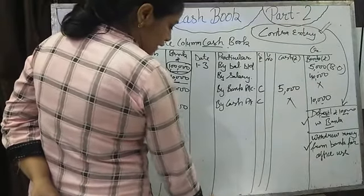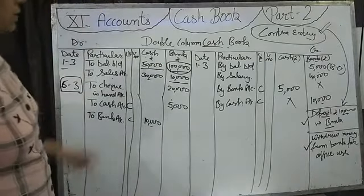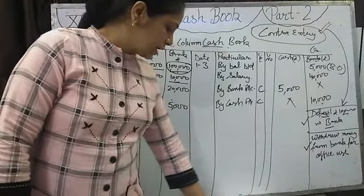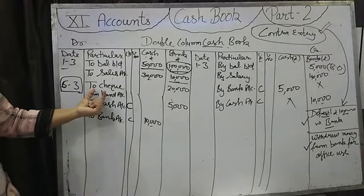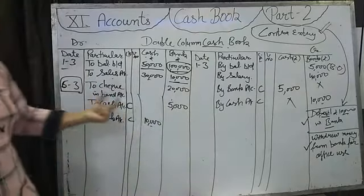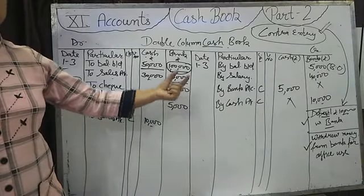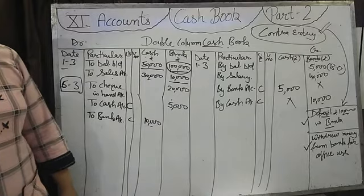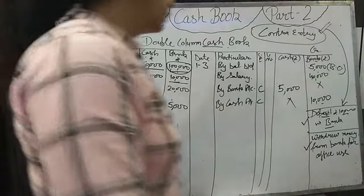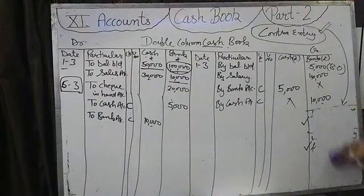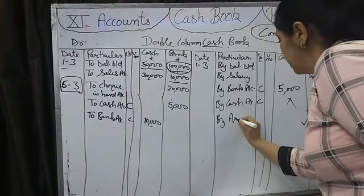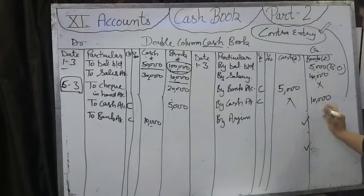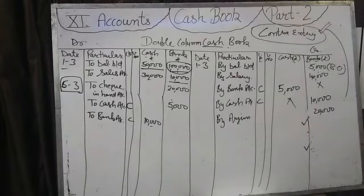In double column cash book, sometimes a cheque may be dishonored. Say Arjun gave us a cheque which we deposited in the bank — by chance that cheque gets cancelled. Then our bank balance will decrease, so we write on the credit side: By Arjun, amount Rs. 20,000. That reduces our bank balance.